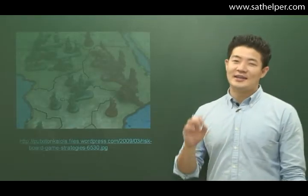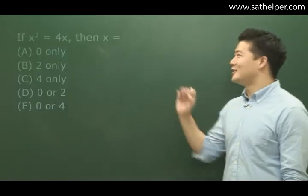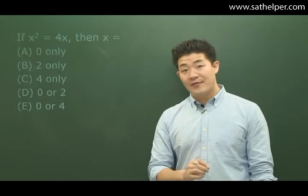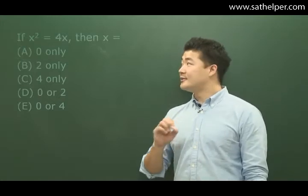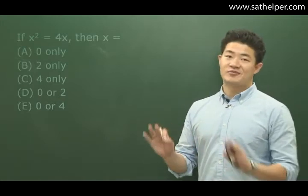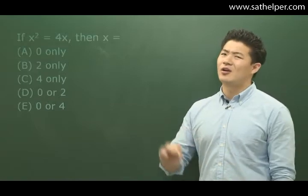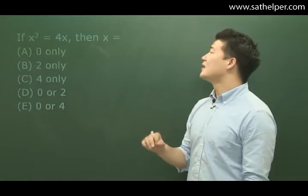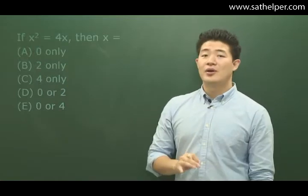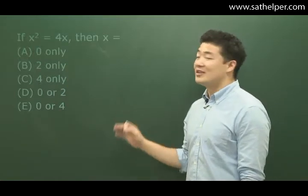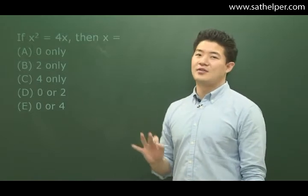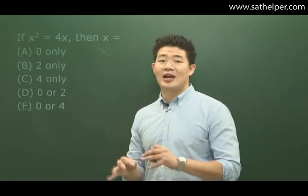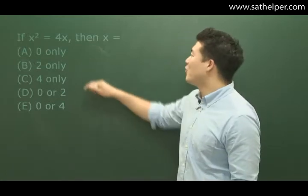As usual, it's our daily strategy time. This is one of the easier strategies, but if you don't understand it, you might get something wrong on a really easy problem. Let's say we have x² = 4x, then x equals...? We'll actually go over this in the third part when we cover zeros, but let's take a preview of it now.